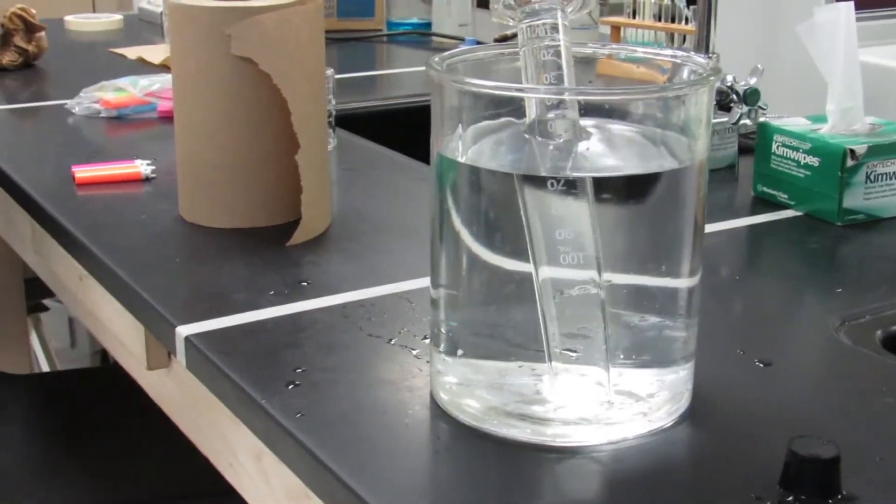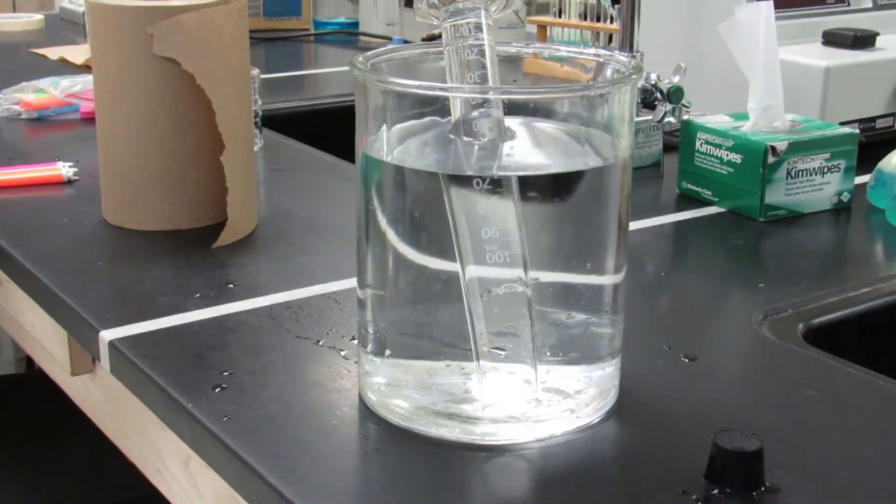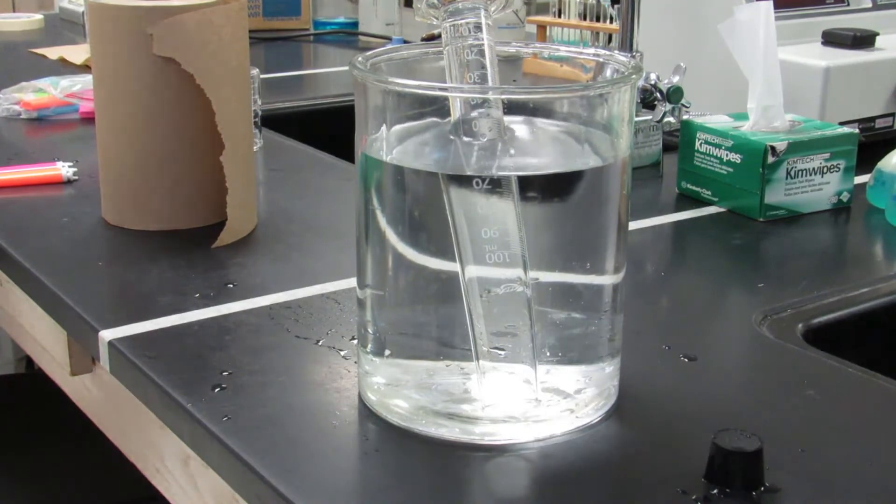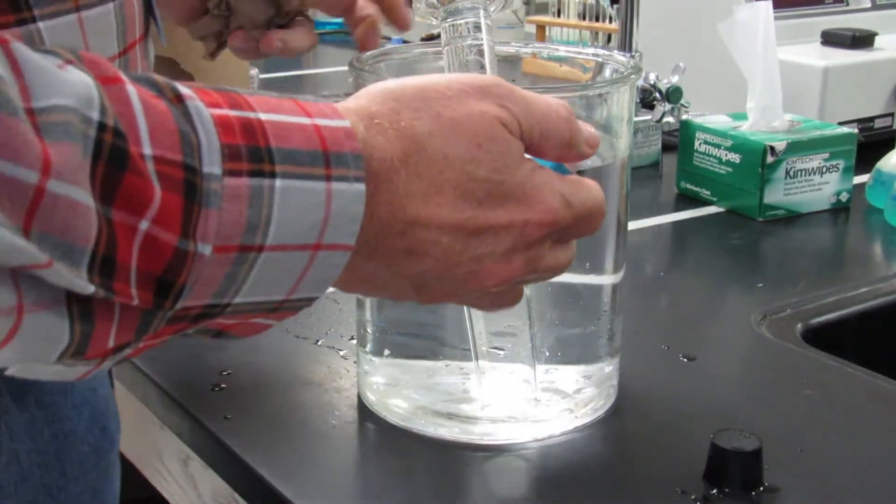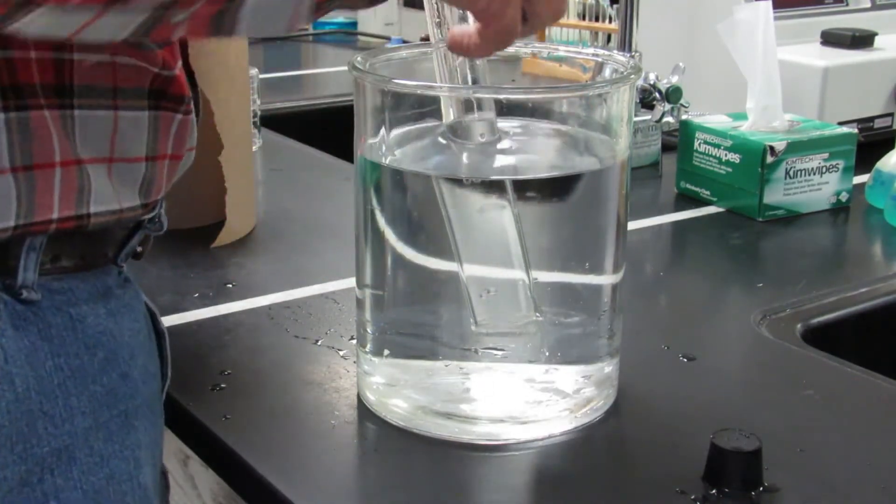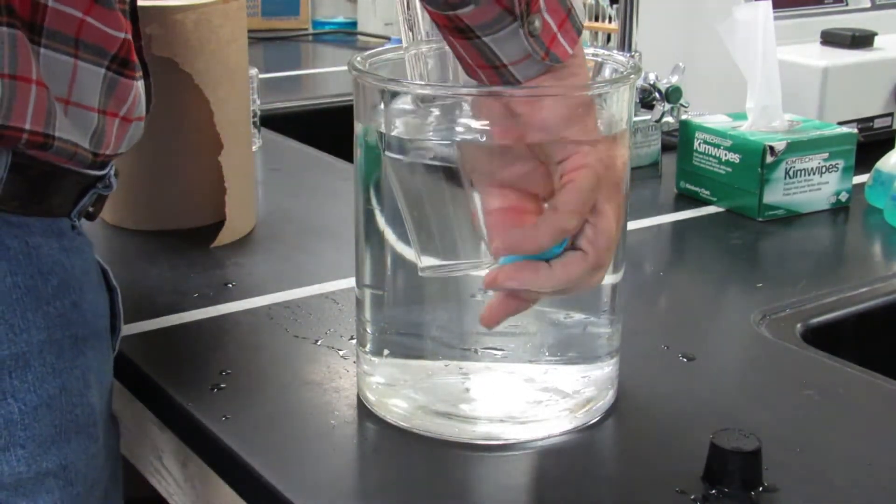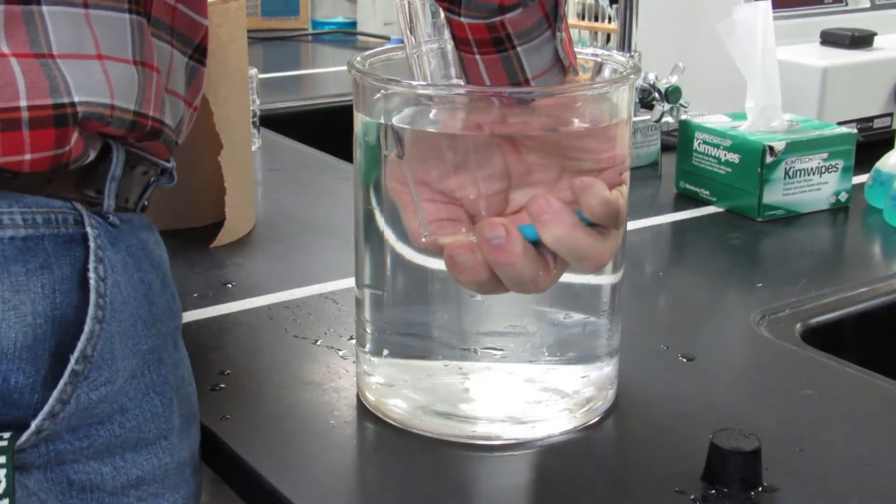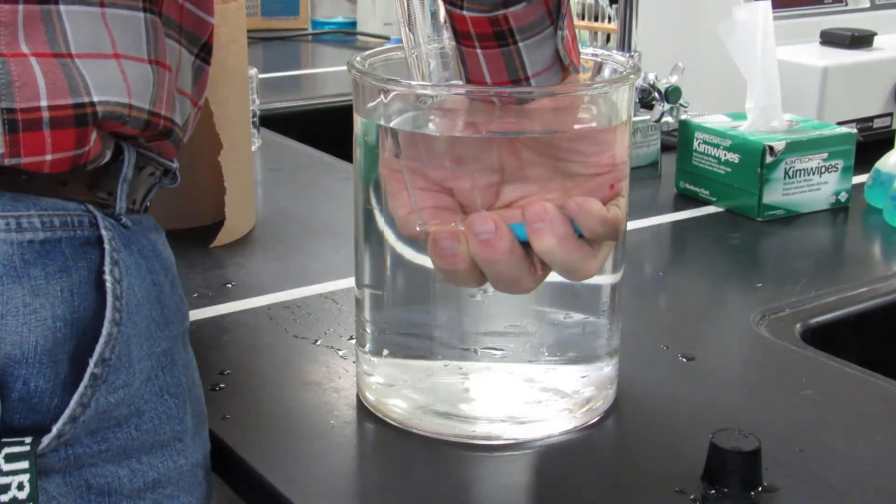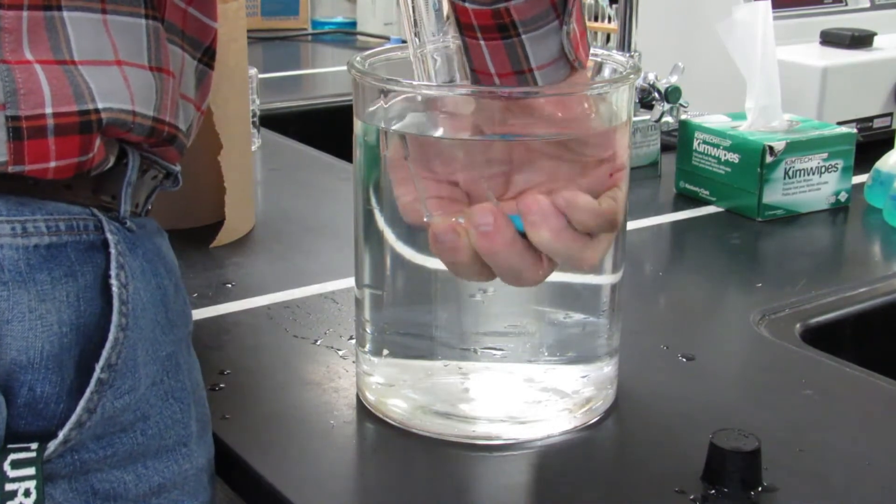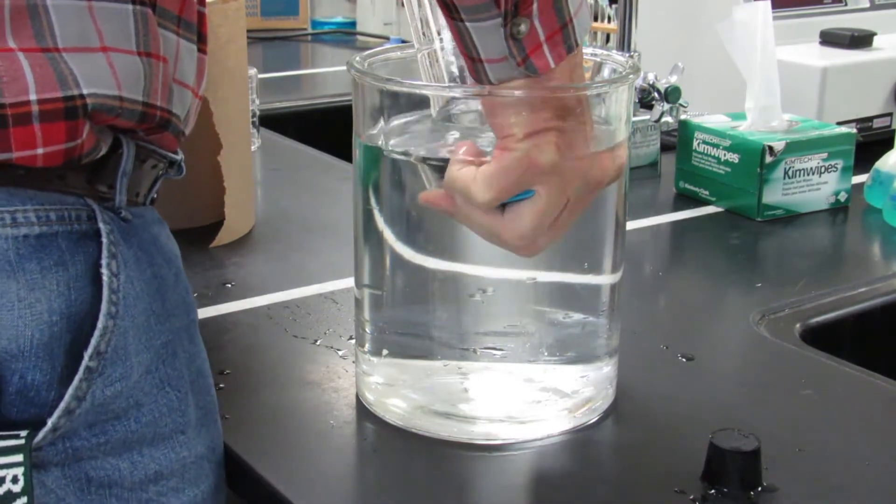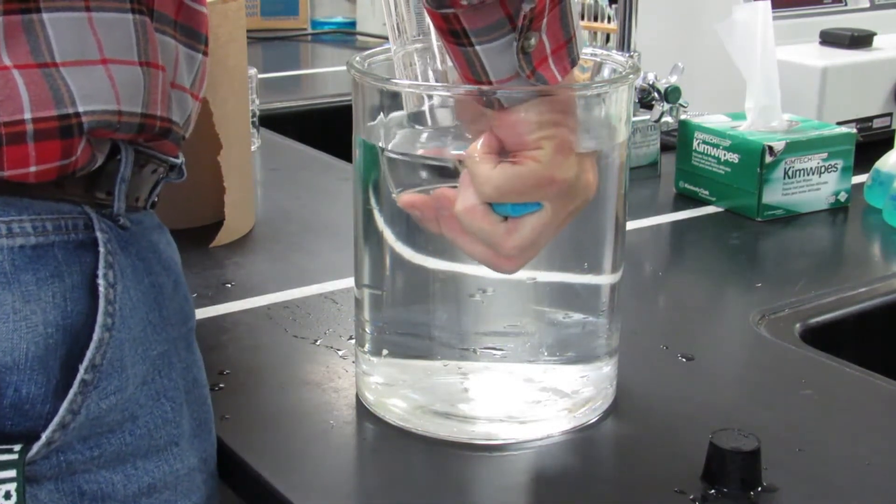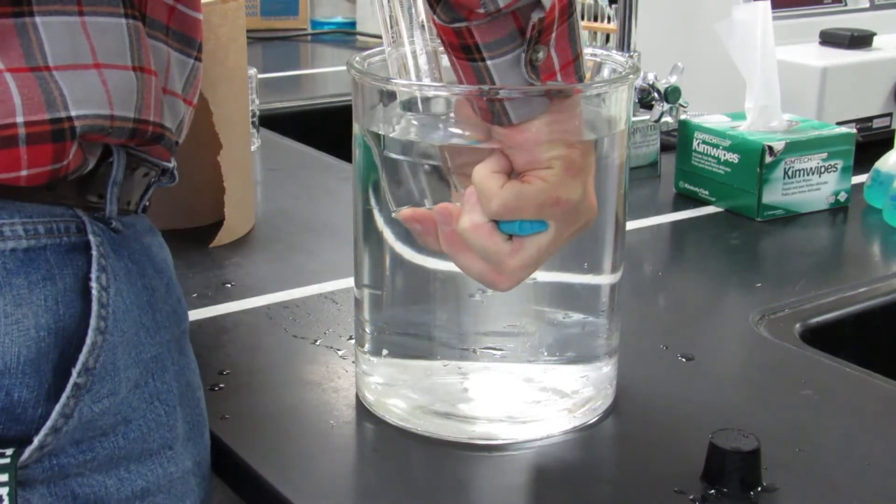Now once we've done that, we want to go ahead and dispense the butane out of the lighter into the graduated cylinder. So put your hand underneath, go ahead and press the button on the lighter. And this is not the most exciting thing in the world to watch, but it takes a long time. You allow the gas to go out.